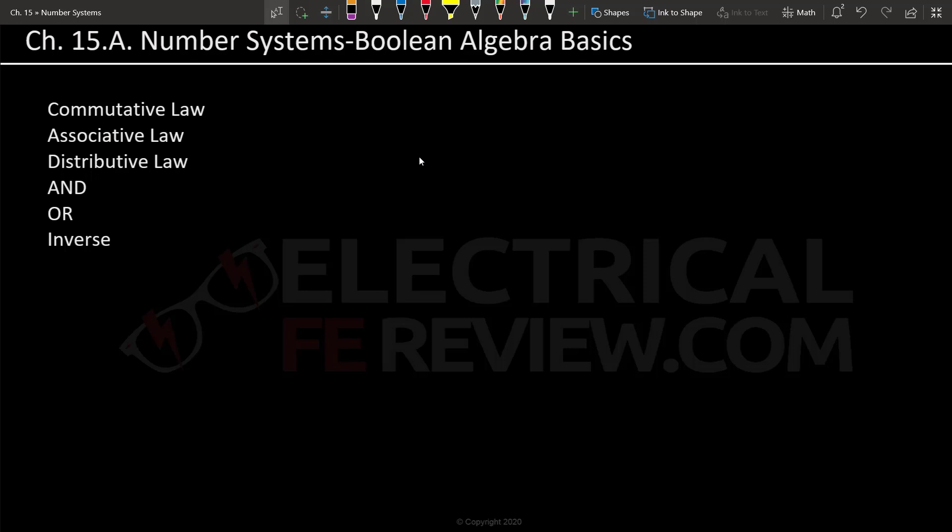There are going to be laws that are very similar to regular algebra like commutative, associative, and distributive law. We'll go over those quickly and then there are some new laws that are specific to Boolean algebra such as the AND, OR, or inverse.